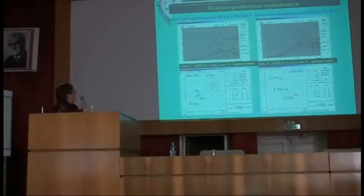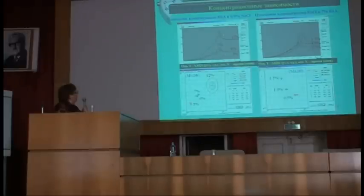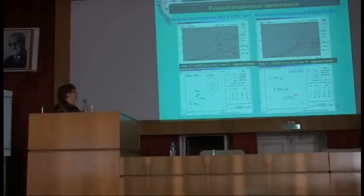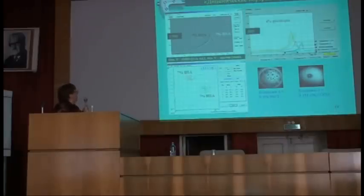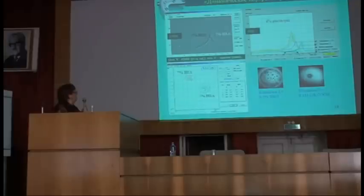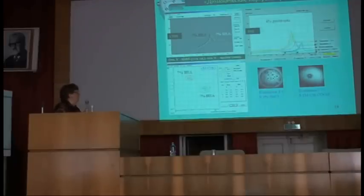Здесь показан пример изменения концентрационных зависимостей: изменение концентрации бычьего сывороточного альбумина в растворе хлорида натрия и распределение статистических различий на плоскости признаков. А это — изменение концентрации соли в 7% бычьем сывороточном альбумине. Два разных альбумина — бычий и человеческий сывороточные — различаются между собой в том числе по динамическим портретам и количественно. Это глобулярные белки; та же разница наблюдается и в фибриллярных белках. Тип растворителя очень существенен и для внешнего вида высохшей капли, и для её динамической характеристики.